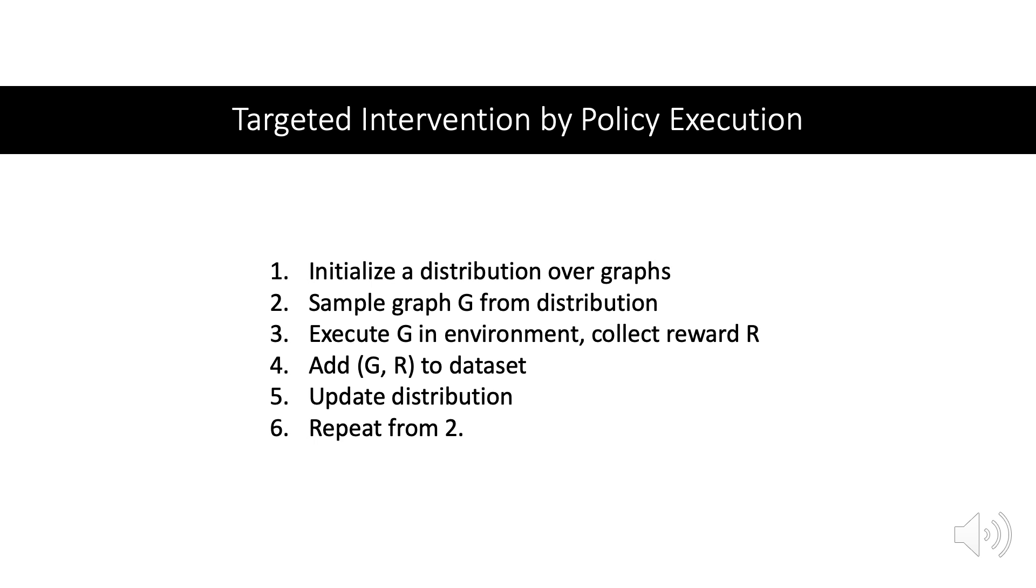To perform targeted intervention using policy execution, we do the following. First, we initialize a distribution over graphs, for which we use a simple linear energy-based model. Then for each step, we sample a graph from the distribution. We execute the graph in the environment and collect a reward. Then we add the graph and reward to a dataset, and update the distribution over graphs, so that graphs that get a high reward become more likely. And we repeat.